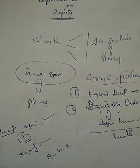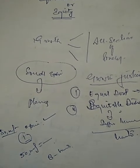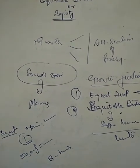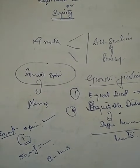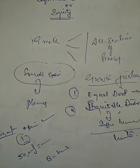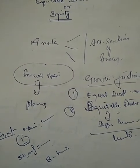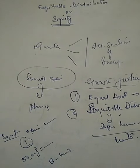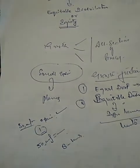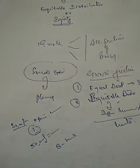Equity in terms of equitable distribution of income implies social justice. Economic growth must be combined with social justice. Only when economic growth is combined with social justice is the growth converted into development.